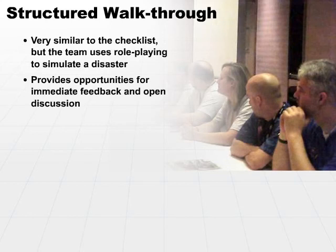That way, you can come back and say, all right, we've had a power outage and it's going to be out for two weeks — what do we do? You start looking at the checklists, but then as you hit each element, everybody can provide feedback. For example, why don't we do step B first instead of step A? So it gives an opportunity for more free-form input.